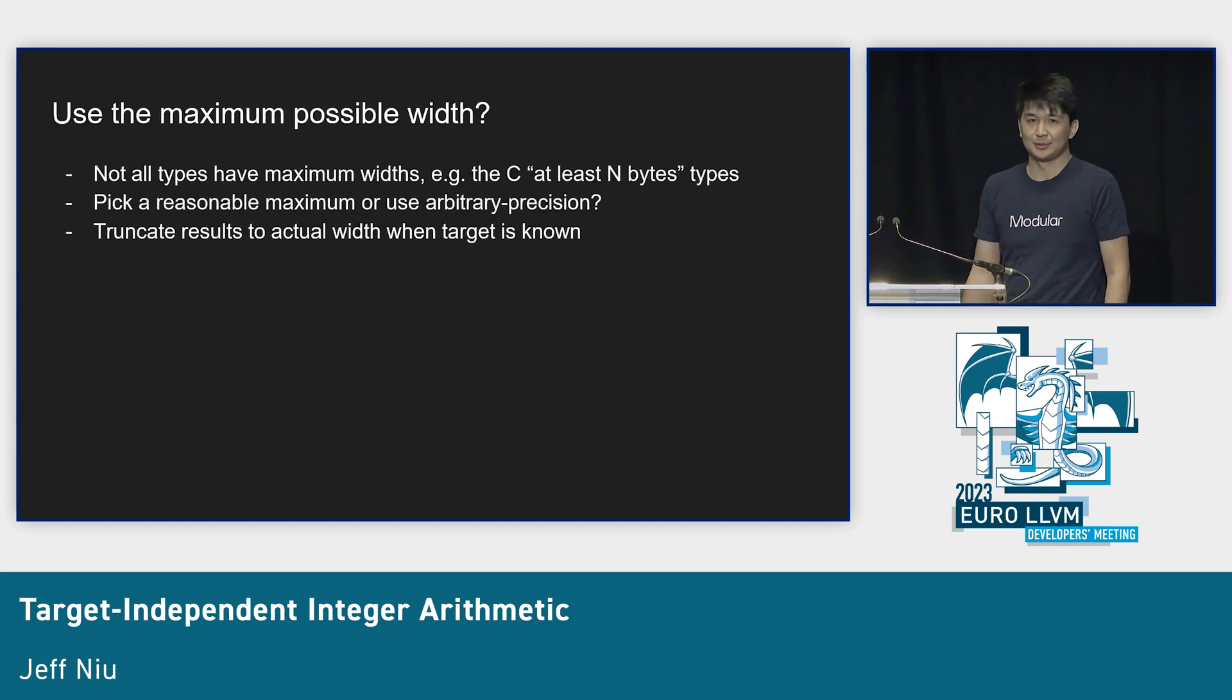One solution is: why don't we use the maximum width? The issue is some types don't have a maximum width. The C standard will say it's at least two bytes, at least four bytes. In practice we can say let's use 128 bits or arbitrary precision width.